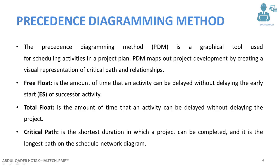Free float is the amount of time that you can delay a specific activity without delaying its successor activity. There are two types of activity relationships: successor and predecessor. A successor activity is the activity after the specific activity, and a predecessor activity is the activity which comes before the activity.